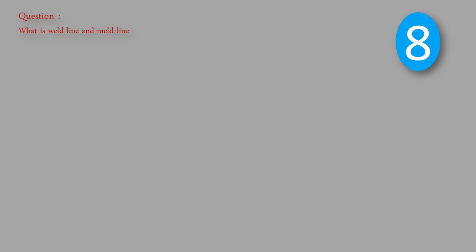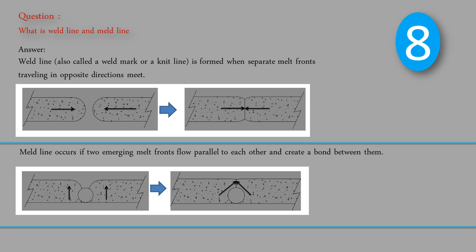Question: What is weld line and meld line? Answer: Weld line, also called a weld mark or knit line, is formed when separate melt fronts traveling in opposite directions meet. Meld line occurs if two emerging melt fronts flow parallel to each other and create a bond between them.